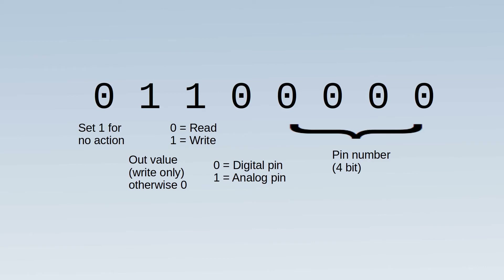The next bit is the value to write out, which applies for digital on and off — PWM is not included. Finally, the most significant bit changes how the rest of the information is used: if set to one, the remaining bits are handled differently, which is used to send null codes or to check whether the SPI device is responding.